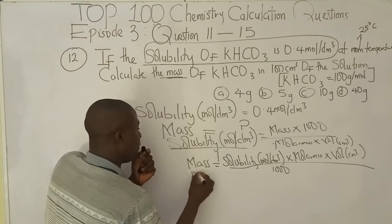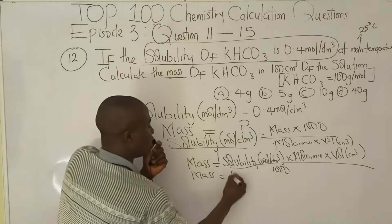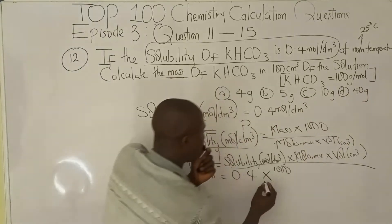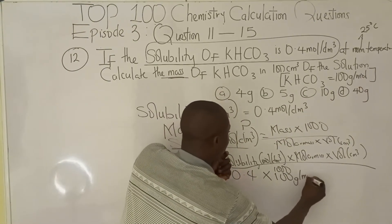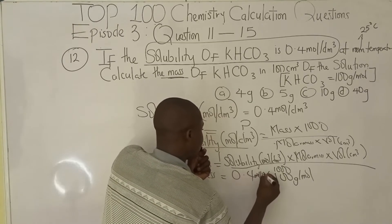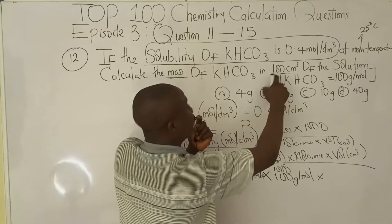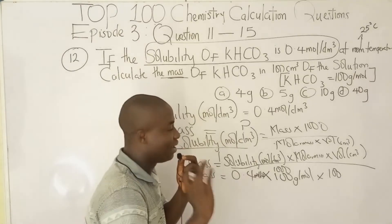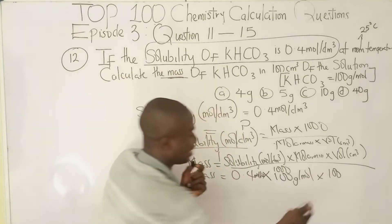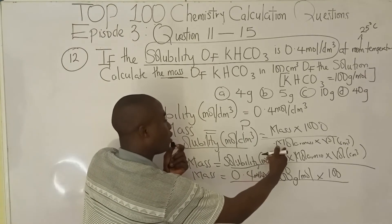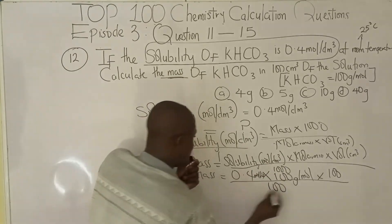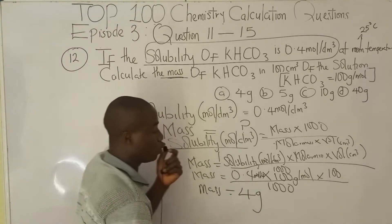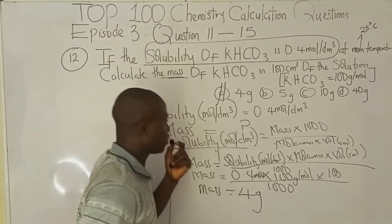Now substituting the values: solubility is 0.4 moles per dm³, the molar mass of KHCO₃ is 100 grams per mole, and the volume is 100 cm³. So mass equals 0.4 times 100 times 100, over 1000. When we calculate, the mass is 4 grams. The answer is option A.